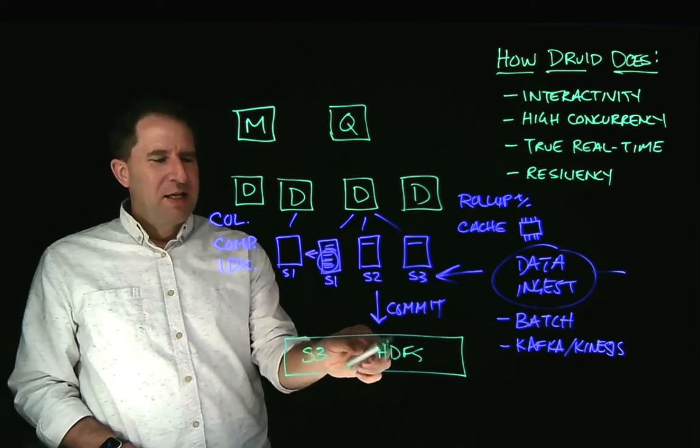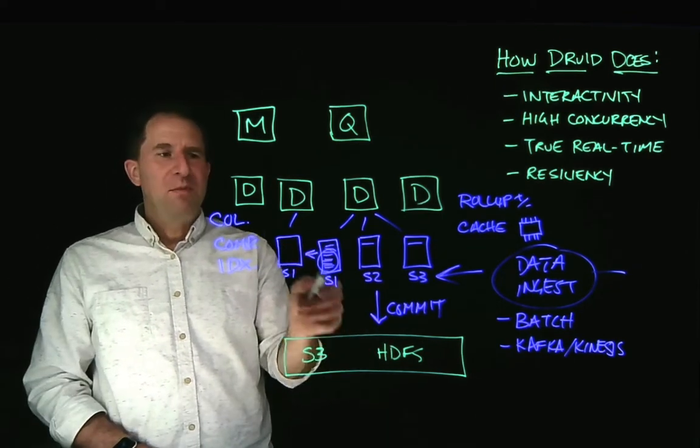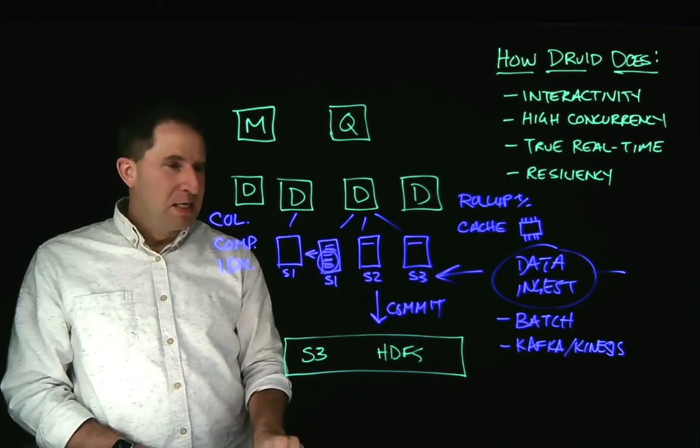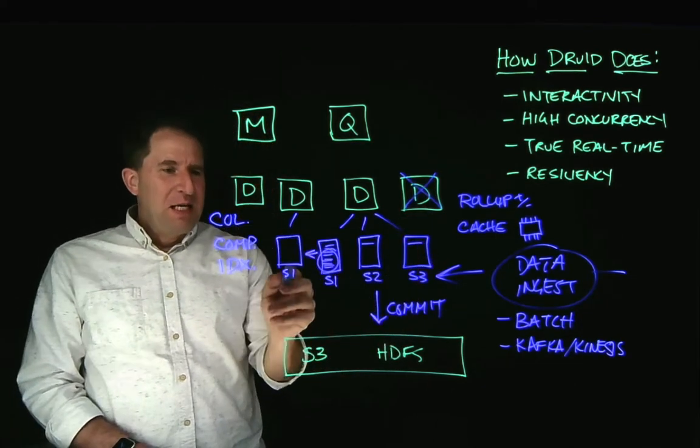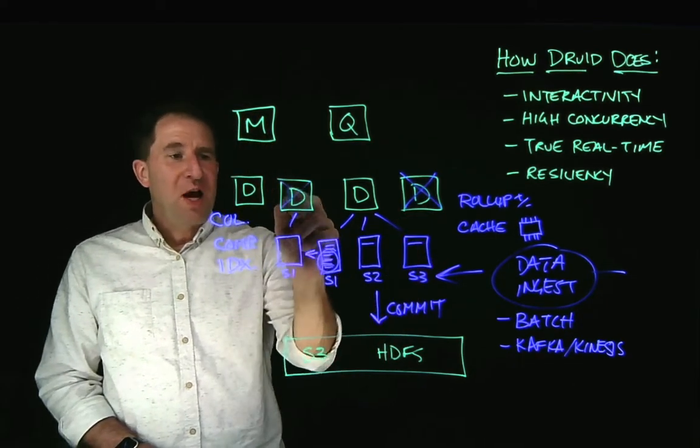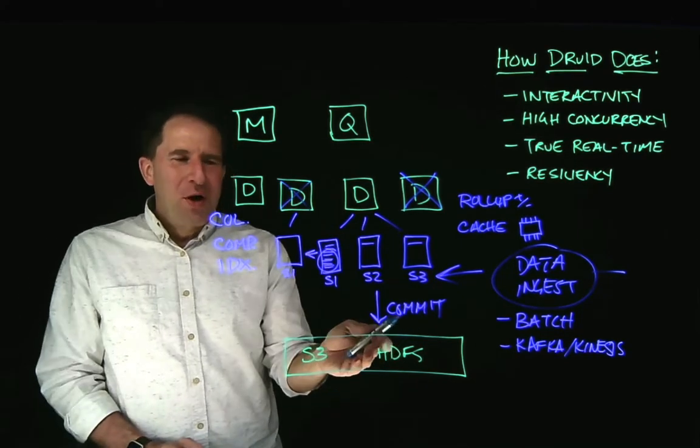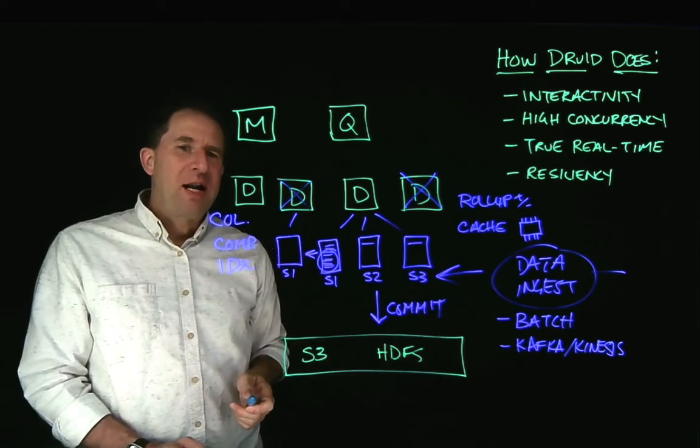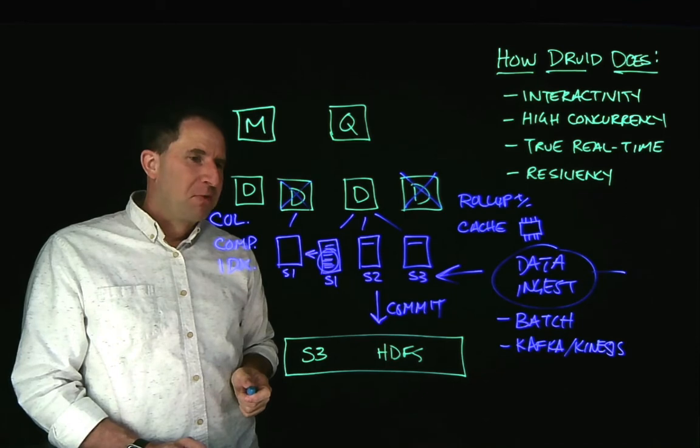Because we have data here in deep storage, if you add a node, we can use that data from deep storage to rebalance the cluster automatically. Or maybe, maybe one of the nodes goes down and maybe even the one that has the replica goes down too. Oh no. Well, with data in deep storage, we can rebuild that cluster and rebalance it again automatically leading to very excellent resiliency results here.